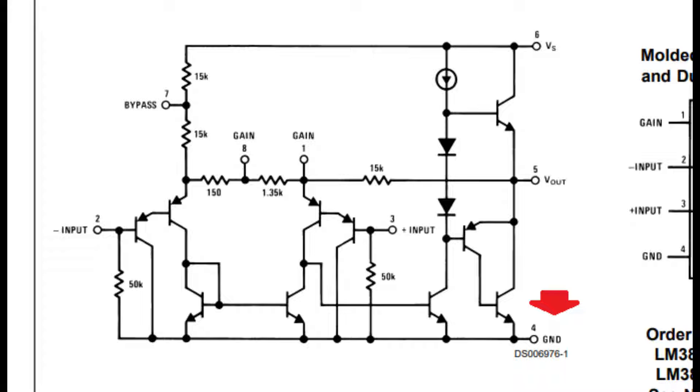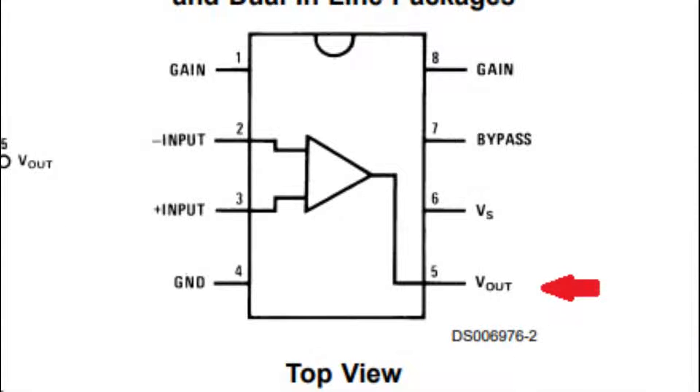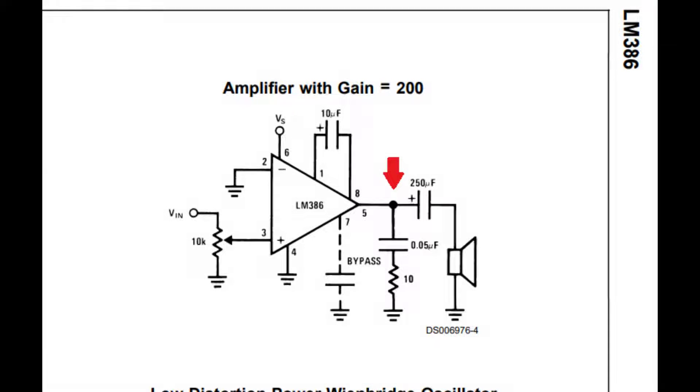On to pin number 5. On the pinout it is labeled as V out for voltage out. This is where the output signal comes out of the amp. We see a resistor and two capacitors. The larger capacitor is a 250 UF. The output of this amp has some DC bias that this capacitor filters out before it gets to the speaker, because DC bias is not good for the speaker.